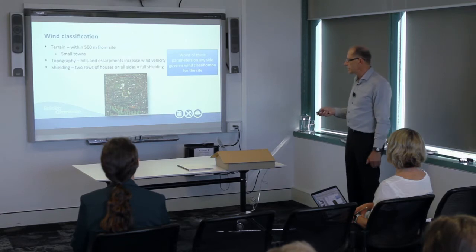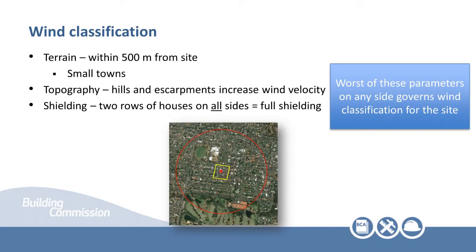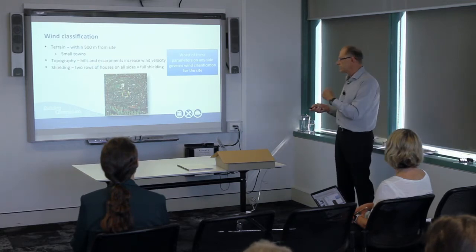The other aspect is shielding. For shielding, we're looking at what is immediately beside the site — the shielding circle is this little yellow rectangle. We're looking at whether we have two rows of houses all the way around our site — if we do, it's fully shielded. Two rows of houses all the way around are required for full shielding. The last thing we look at is topography — is it on a hill? Wind speeds up when it goes over hills; as wind approaches a hill it gets squeezed to go over the top and can almost double in speed if the hill is steep and big enough.